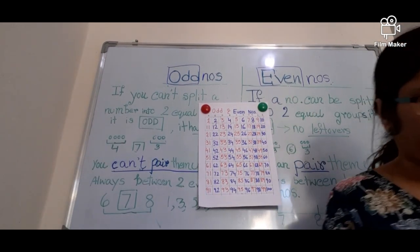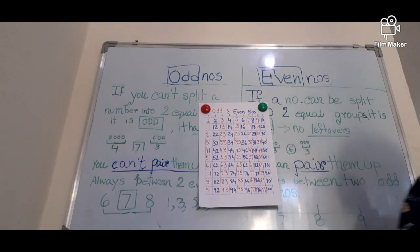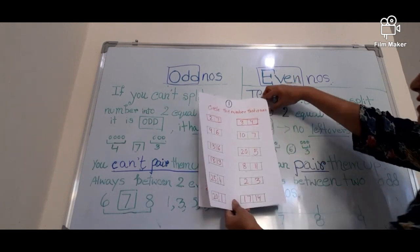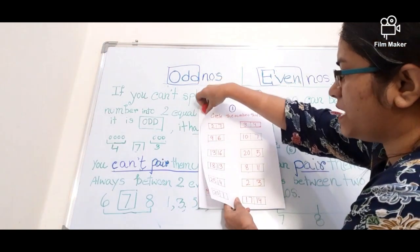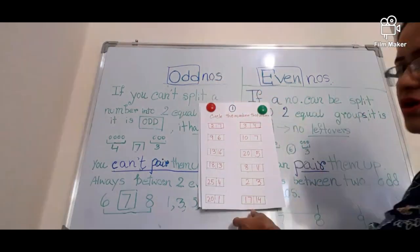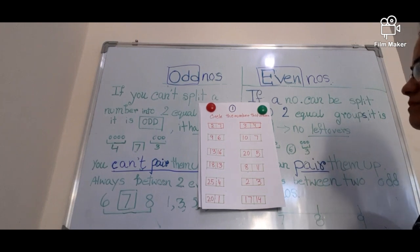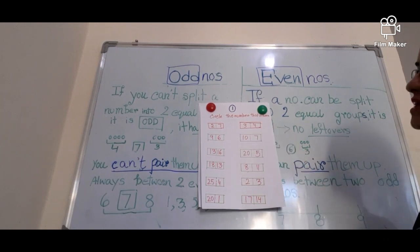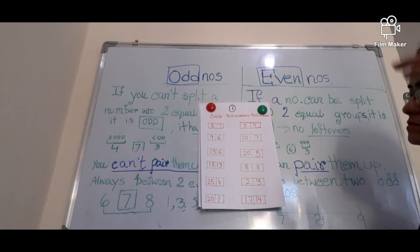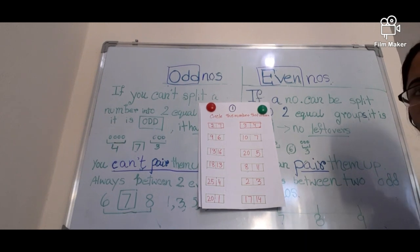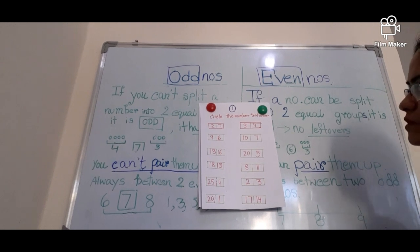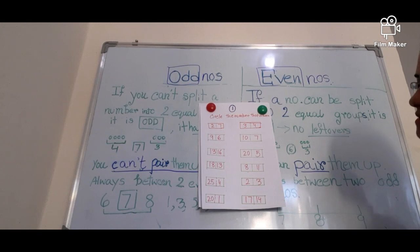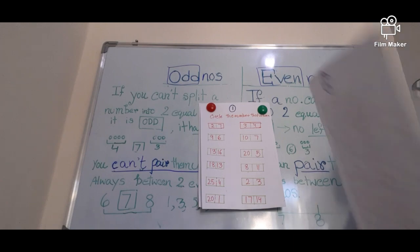Now I will show you some worksheets. First worksheet: circle the even number. Two or seven — which one is even? Two — you circle two. Three or four — which one is even? Four is the even number, so you circle four. Nine or six — six is the even number, so you circle six. That is how you complete this type of worksheet.